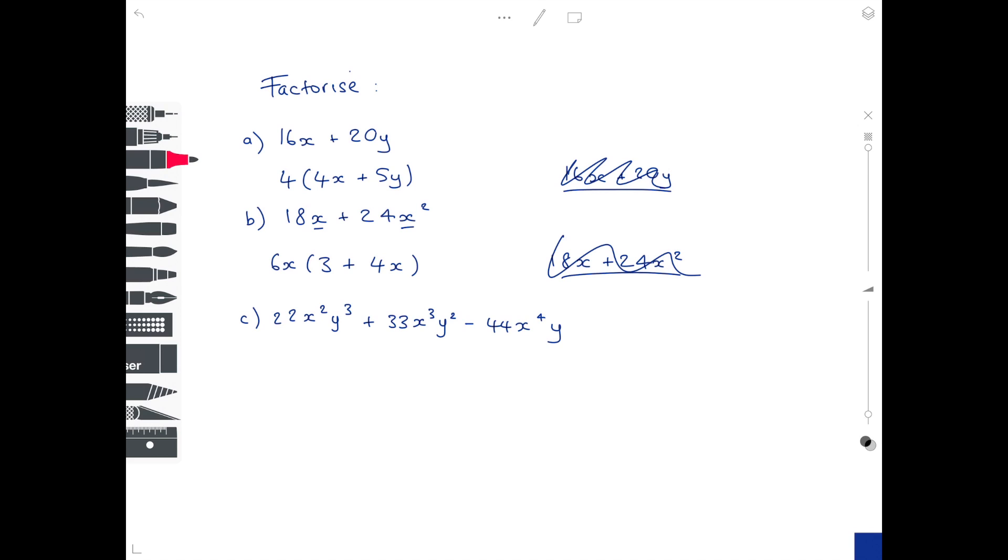Part c is far more complicated, so we're looking for common factors found within all three expressions. Let's start by looking at the x's. We have x squared, x cubed, and x to the 4, so they all contain a minimum of x squared. That's going to go at the front. Looking at the y's now, we've got y cubed, y squared, and y, so they all contain a minimum of y. Now let's look at the numbers 22, 33, and 44. The common factor is 11.